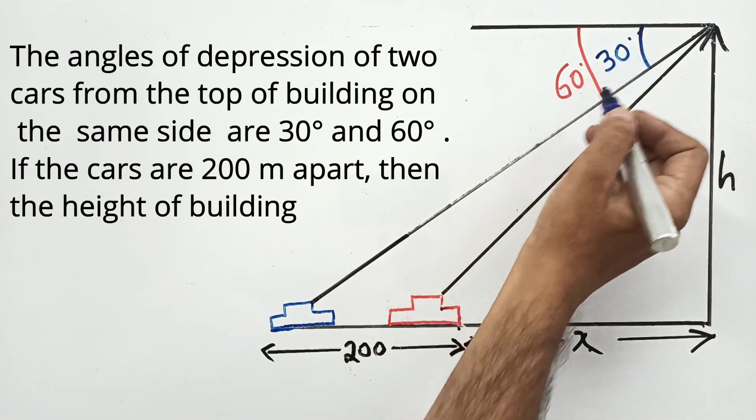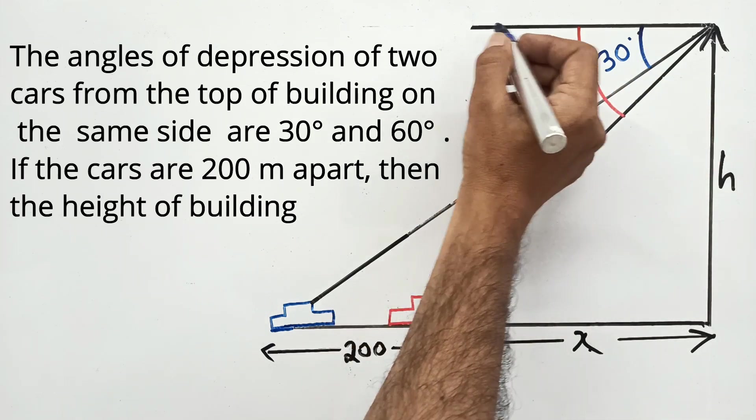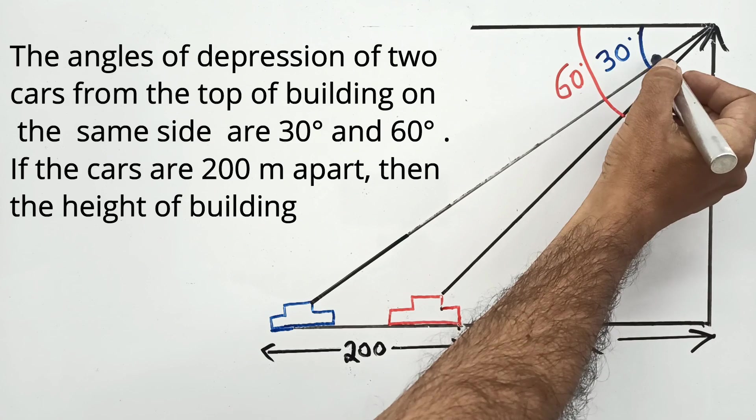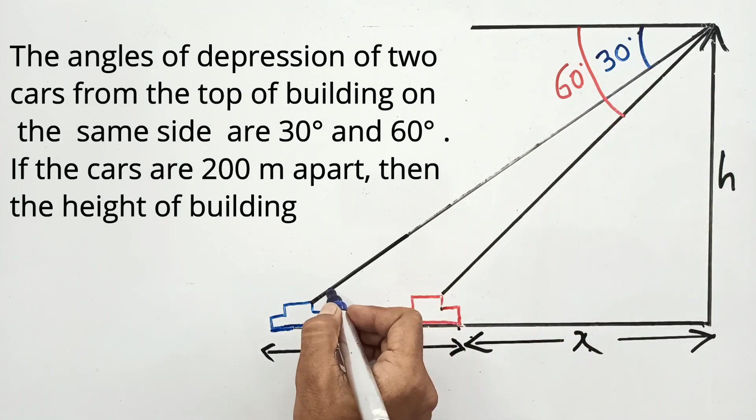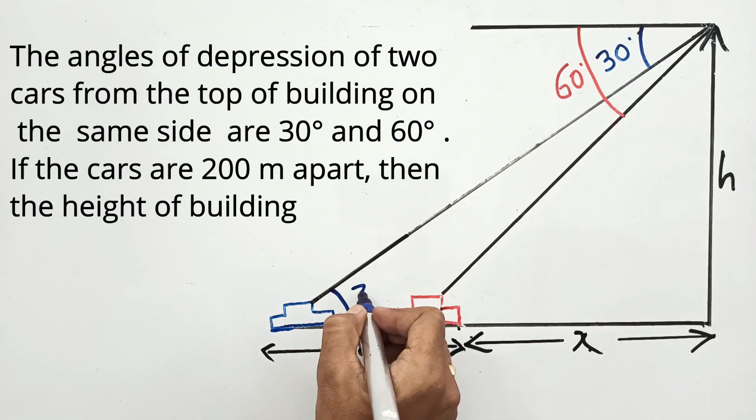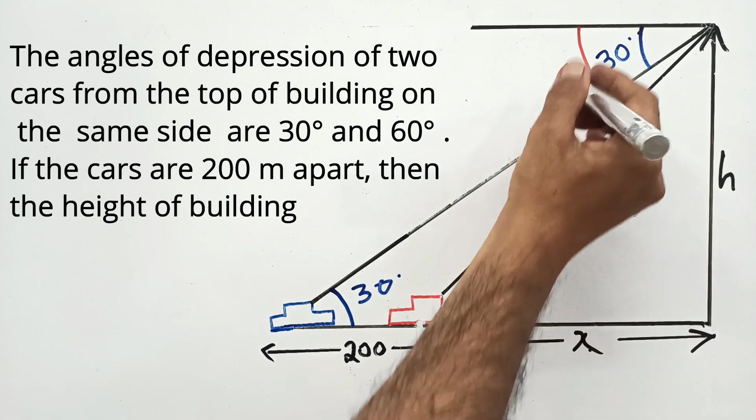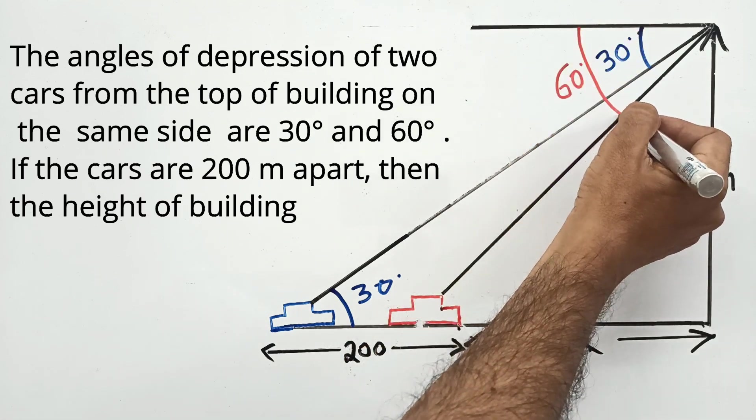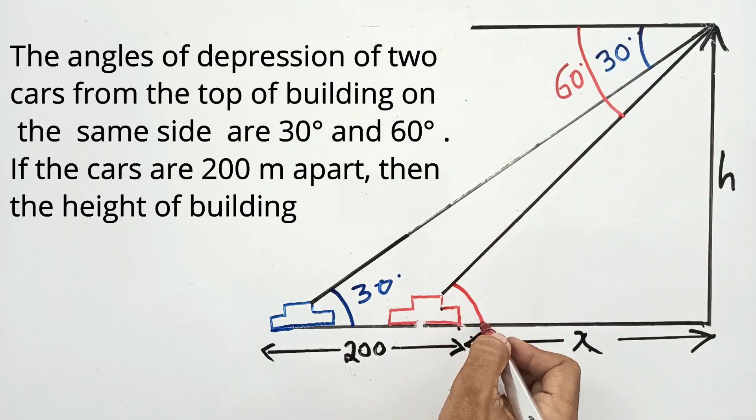Given the angles of depression, we will use the angles of elevation. Since these lines are parallel, this is 30 degrees. The line of sight will also be 30 degrees. Similarly, this is the line of sight for 60 degrees, so this is 60 degrees.